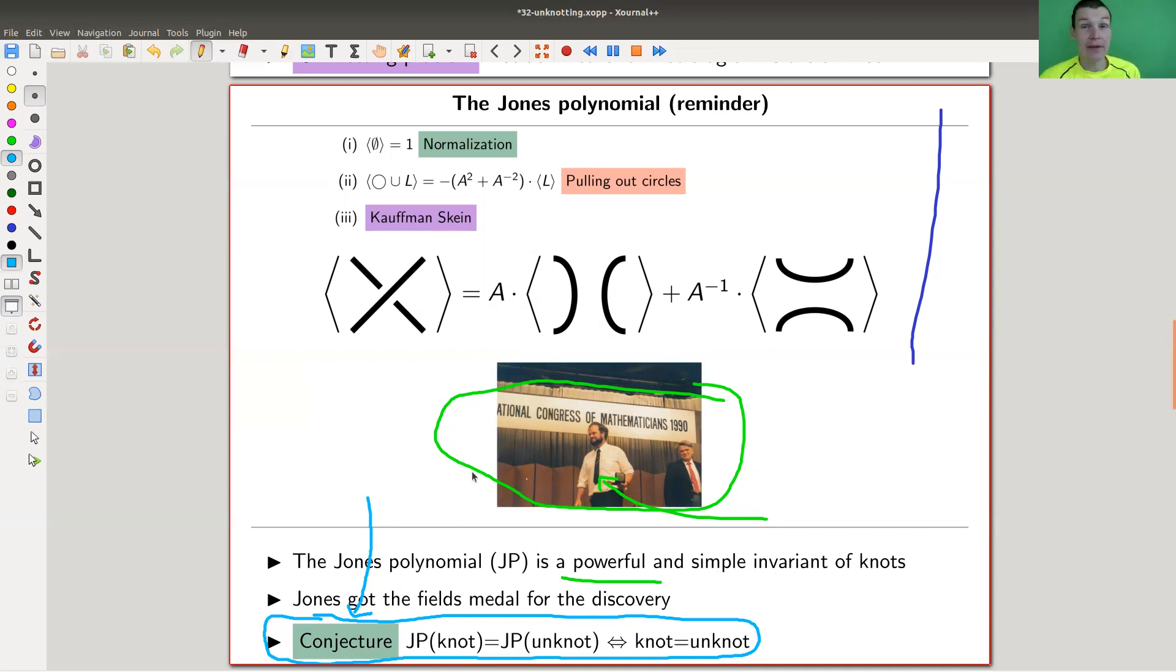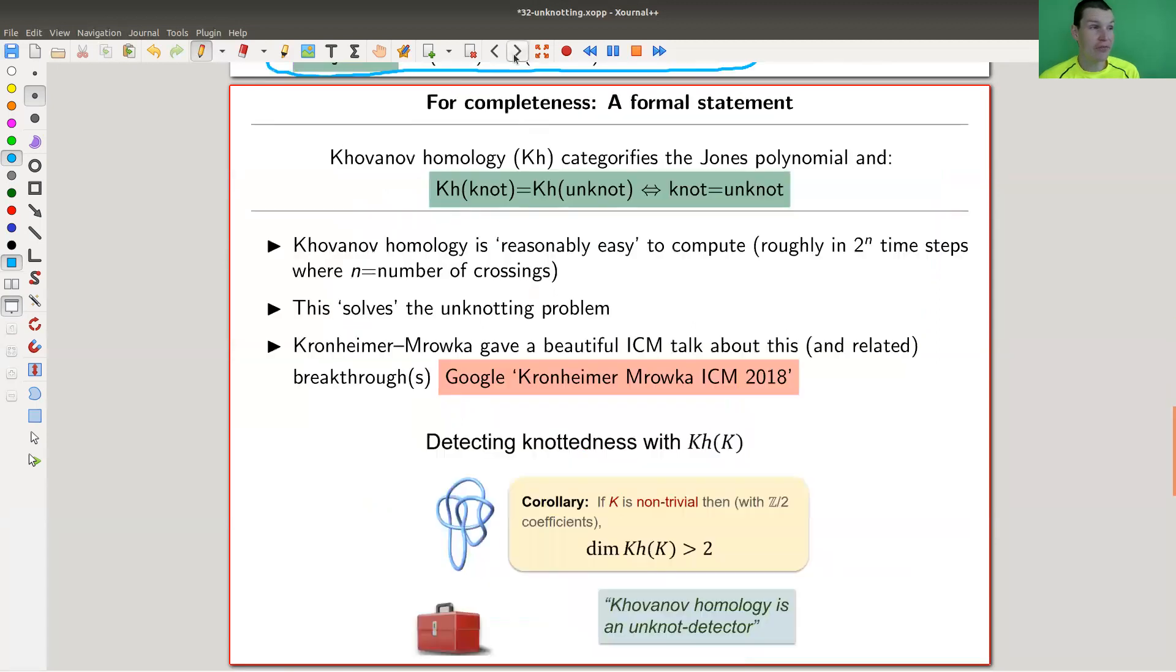But it turns out that in recent years, there was a breakthrough. Maybe the Jones polynomial doesn't detect the unknot, we don't know. But its categorification, the Khovanov homology that we had in one of the videos, this one actually detects the unknot, and we can prove that. Same type of formula: Khovanov of knot is Khovanov of unknot if and only if knot is unknot. I mean knot diagrams. Fantastic.